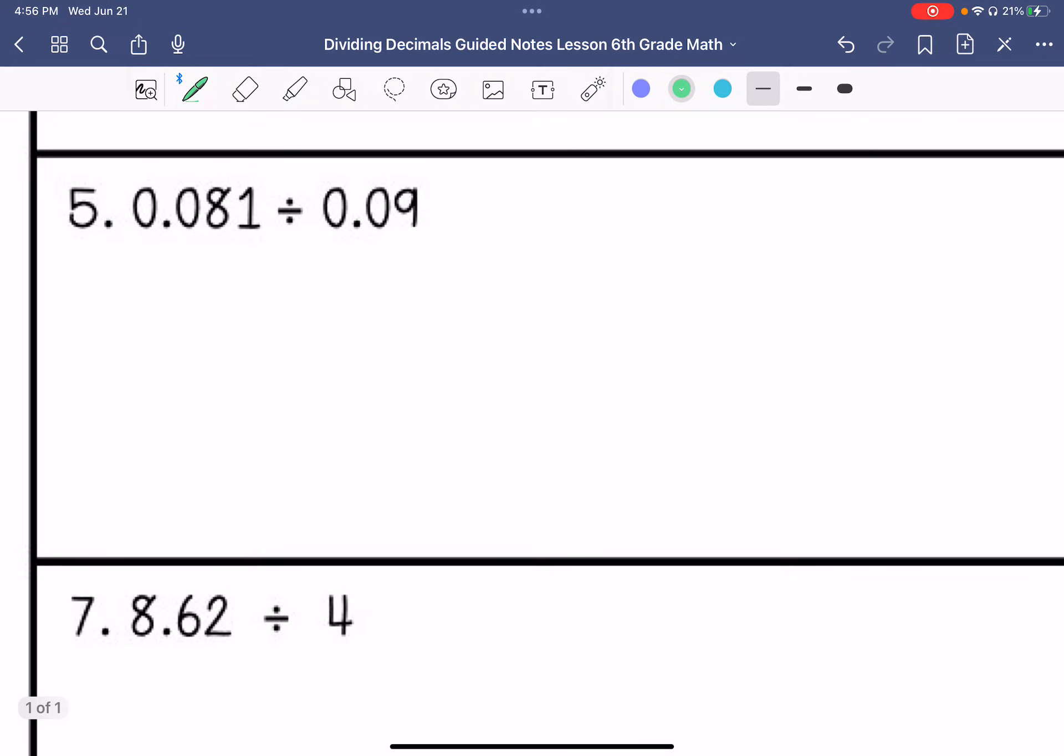Number 5. I will leave my decimal here. Move it twice here. So I have 9 as my divisor and 8.1 as my dividend. 9 cannot go into 8. It goes into 81 nine times. So my answer is 0.9.